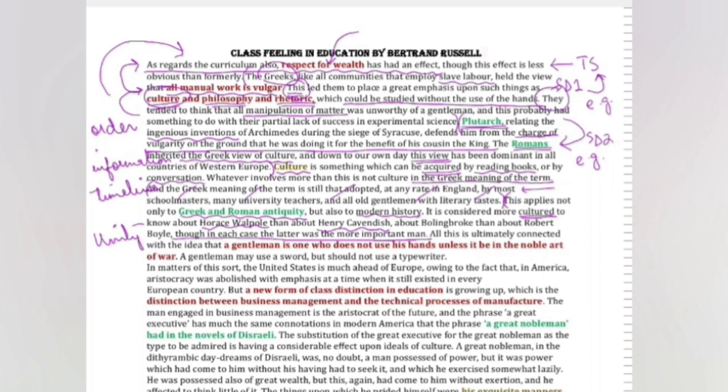Look at the comment that Russell has made. Though in each case, the latter was the more important man. So Cavendish was more important, Robert Boyle was more important, but less known. All this is ultimately connected with the idea that a gentleman is one who does not use his hands unless it be in the noble art of war. A gentleman may use a sword but should not use a typewriter.